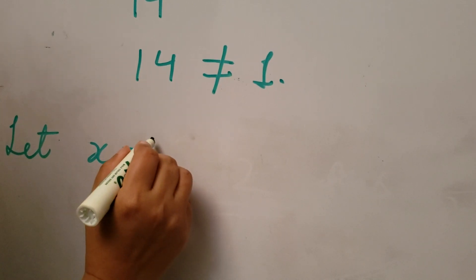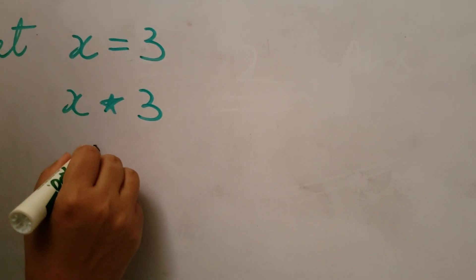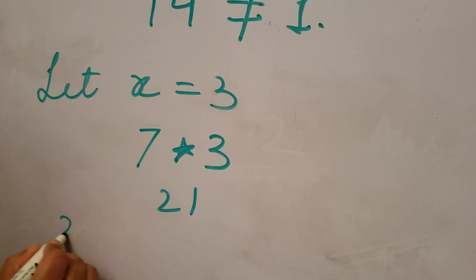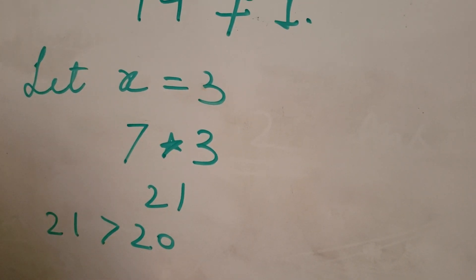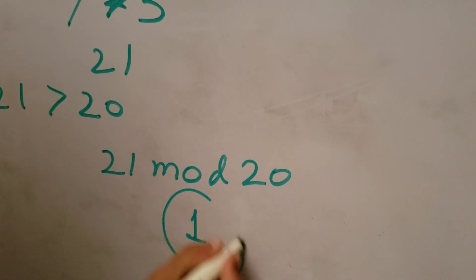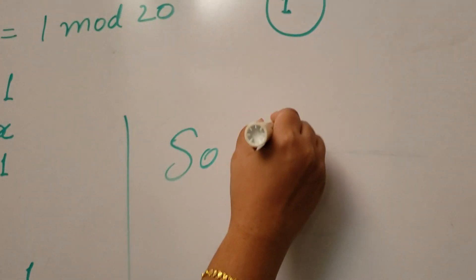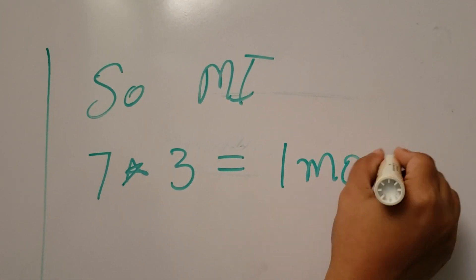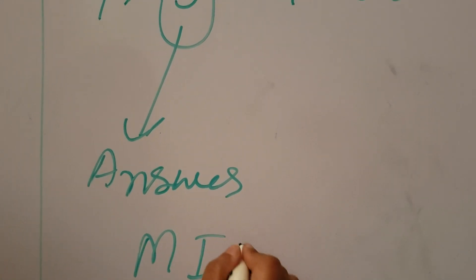Now we'll take x equal to 3. 7 times 3 is 21, and 21 is greater than 20, so we'll take mod of 21 with 20. 21 mod 20 which is 1, and we are looking for 1. So multiplicative inverse: 7 times 3 is 1 mod 20, so the multiplicative inverse is 3.